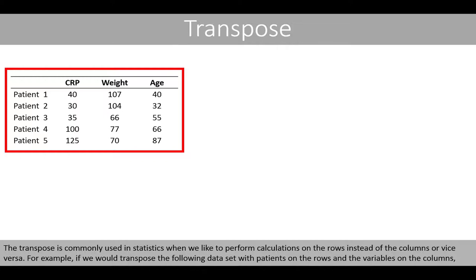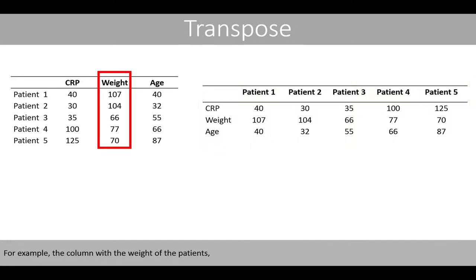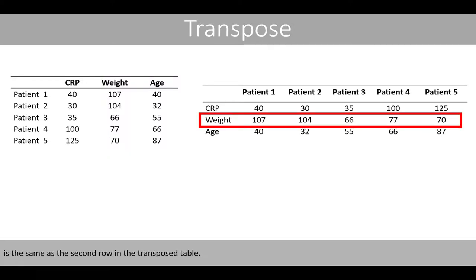The transpose is commonly used in statistics when we like to perform calculations on the rows instead of columns or vice versa. For example, if we transpose a data set with patients on the rows and variables on the columns, we get a table where patients are now on the columns and variables are on the rows. For example, the column with the weight of the patients is the same as the second row in the transposed table.